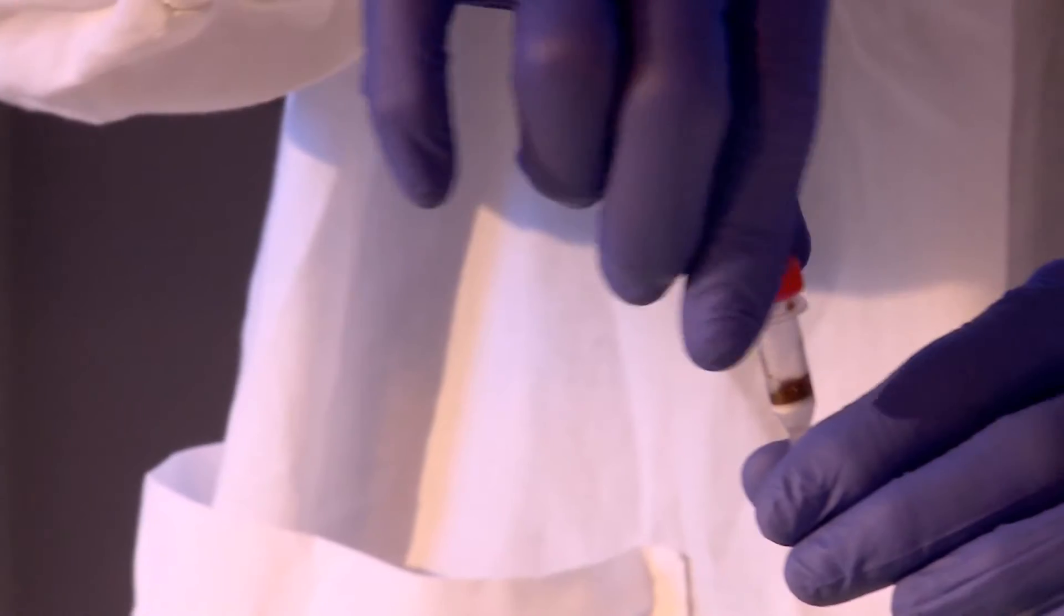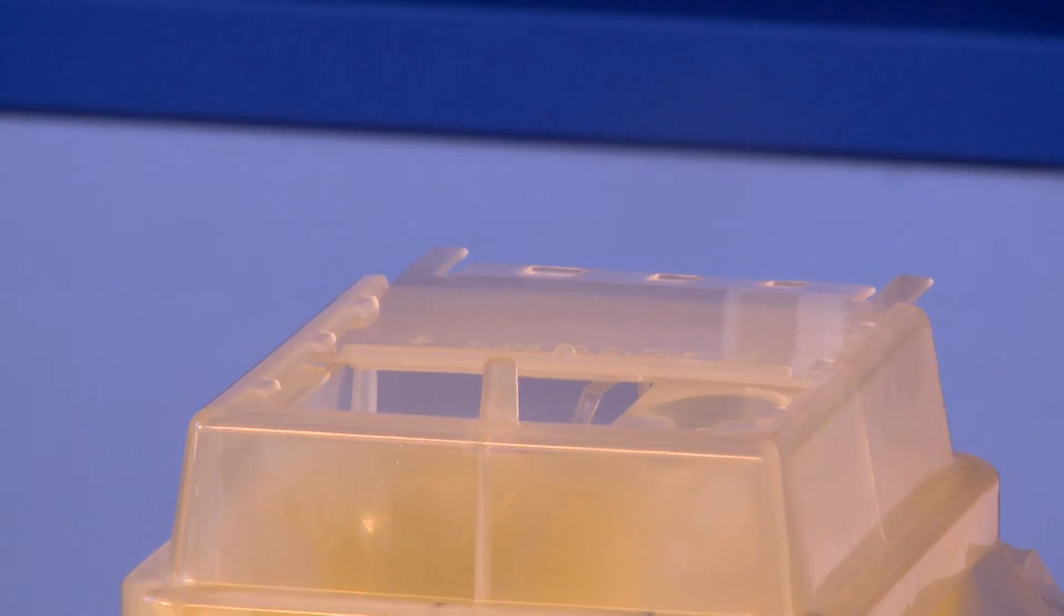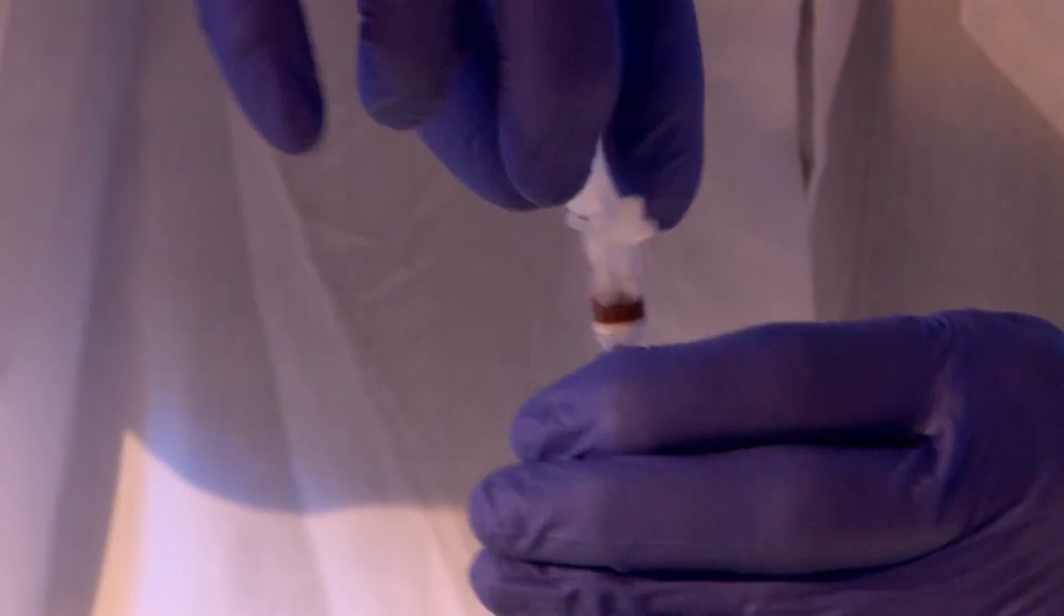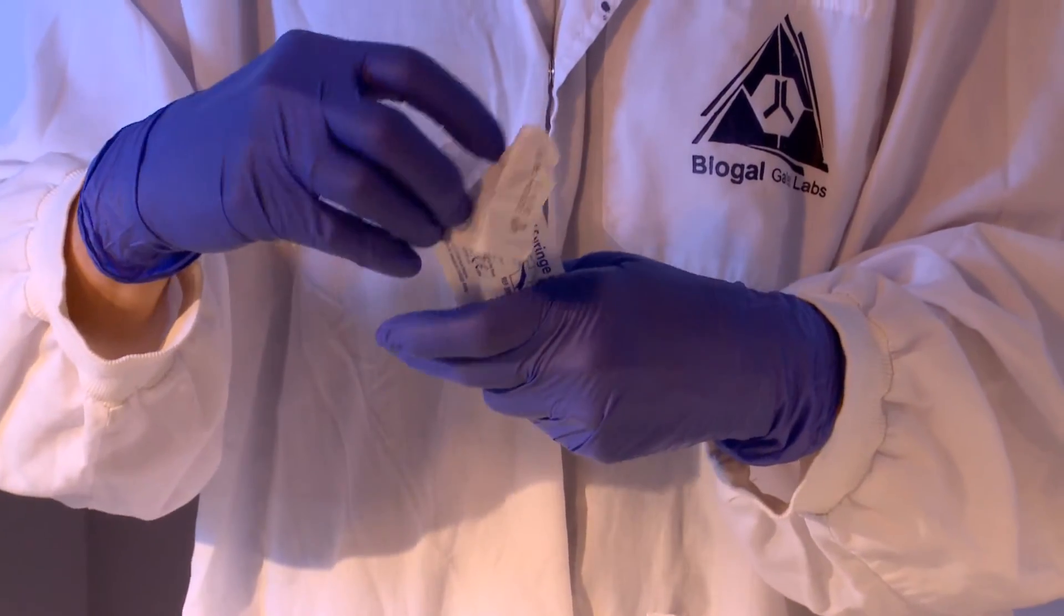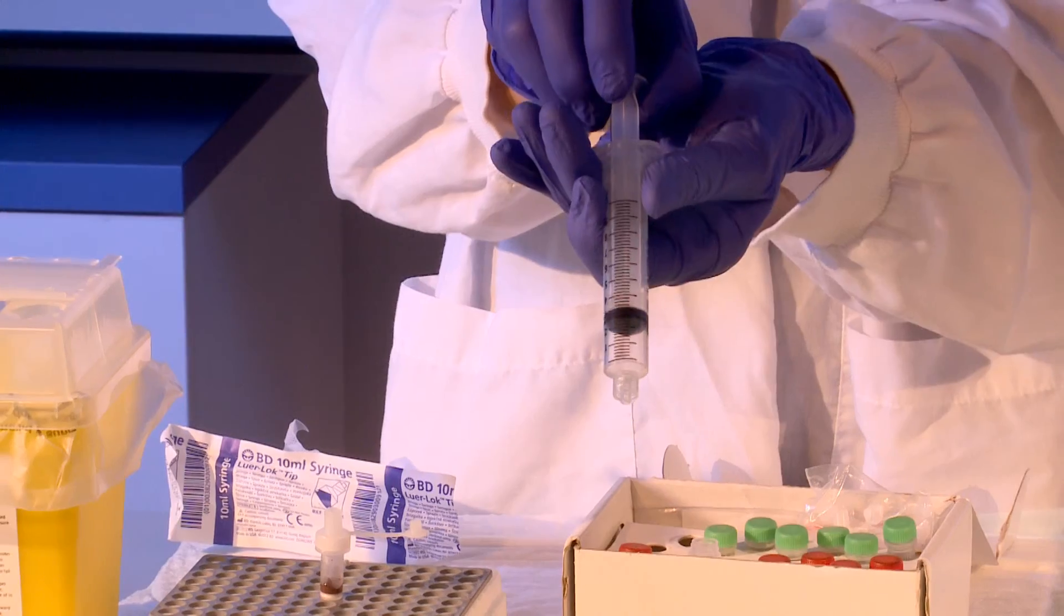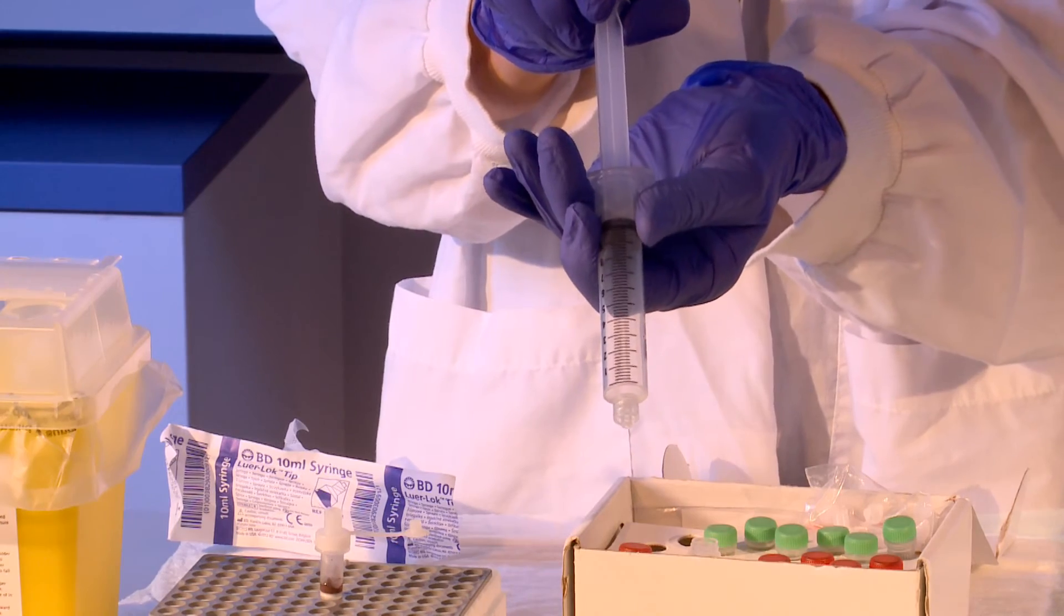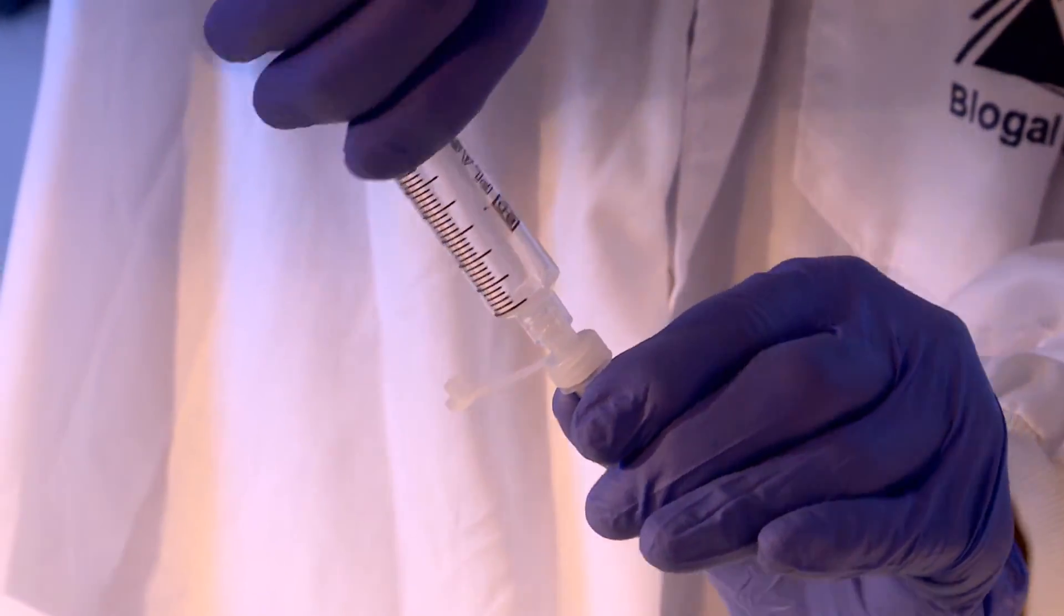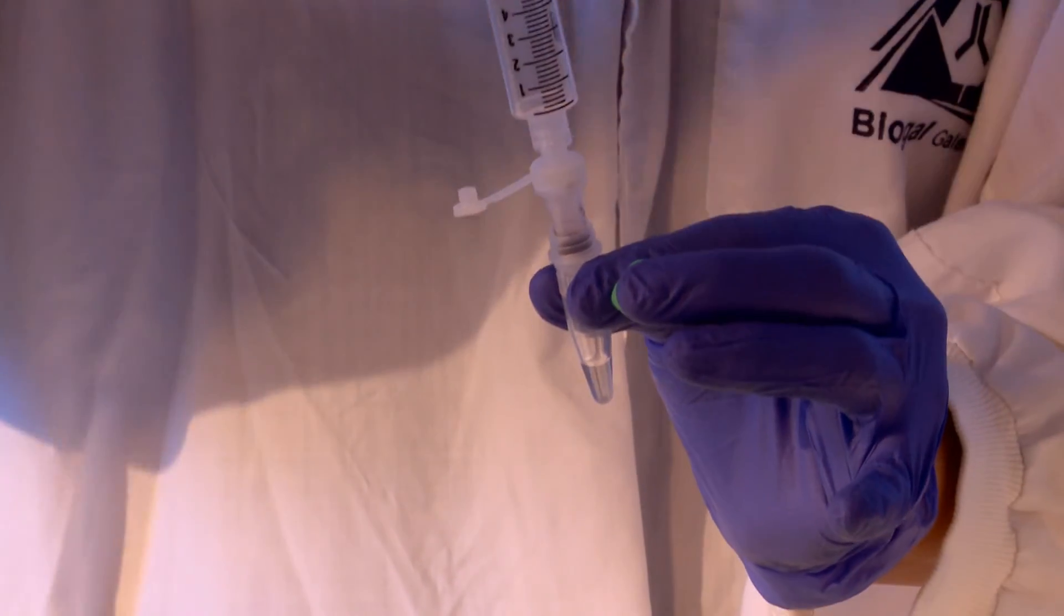Syringe method: Remove the red lid from the column and dispose of it in a biohazard bin. Firmly screw a Luer Lock lid to the column. Displace 10 milliliters of air in the syringe supplied by pulling the plunger to the 10-milliliter mark. Firmly screw the barrel of the syringe onto the Luer Lock lid.